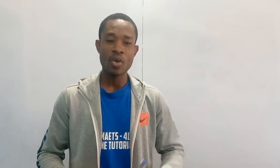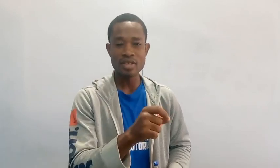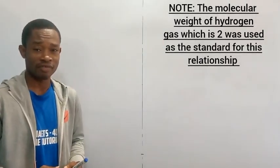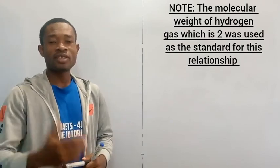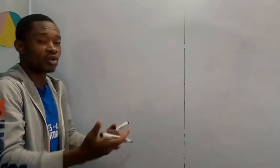According to Graham's Law of diffusion, the rate of diffusion is inversely proportional to the square root of the gas density. I went further to establish that there is a direct relationship between the density of the gas and the molecular weight of the gas. Using that knowledge we can link the density of a given substance to its relative molecular mass, and once you have this knowledge you can determine the molecular formula of that substance.